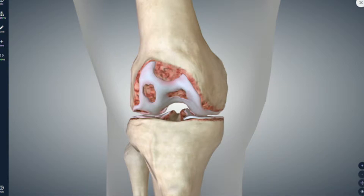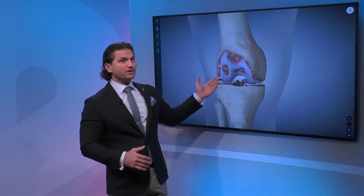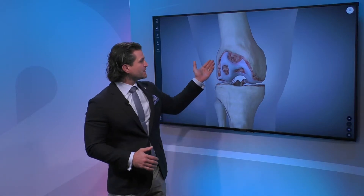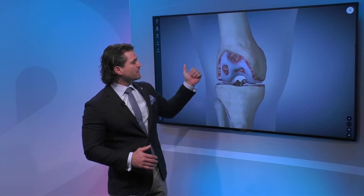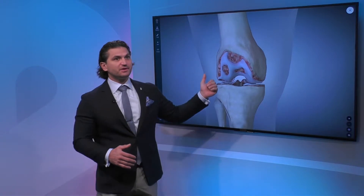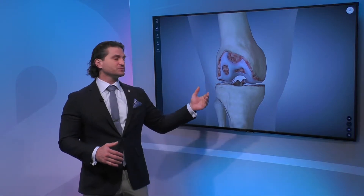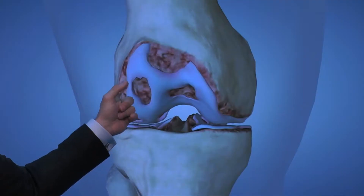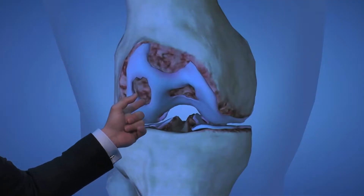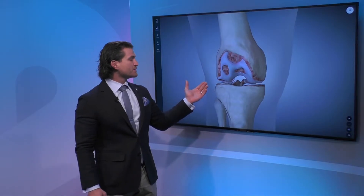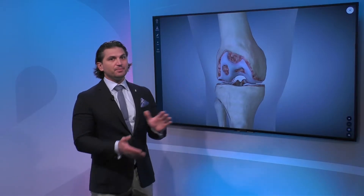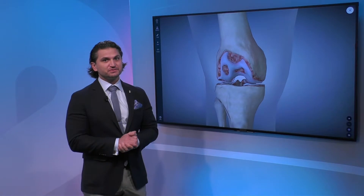Over time and with wear and tear we start to get areas of injury in the cartilage that eventually turn into areas of erosion, where we start to see what we call subchondral bone — the bone underneath the cartilage — coming through. And bone is not an ideal surface to walk on.